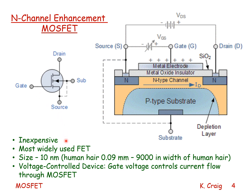This transistor is inexpensive. It's the most widely used field effect transistor. It is a field effect transistor because no current flows through the gate — it is a voltage controlled device. It is very small; the size is about 10 nanometers and getting smaller every year. Consider that the size of a human hair is about 0.09 millimeters in diameter — about 9,000 of these can be fit in the width of a human hair. The gate voltage controls current flow through the MOSFET.